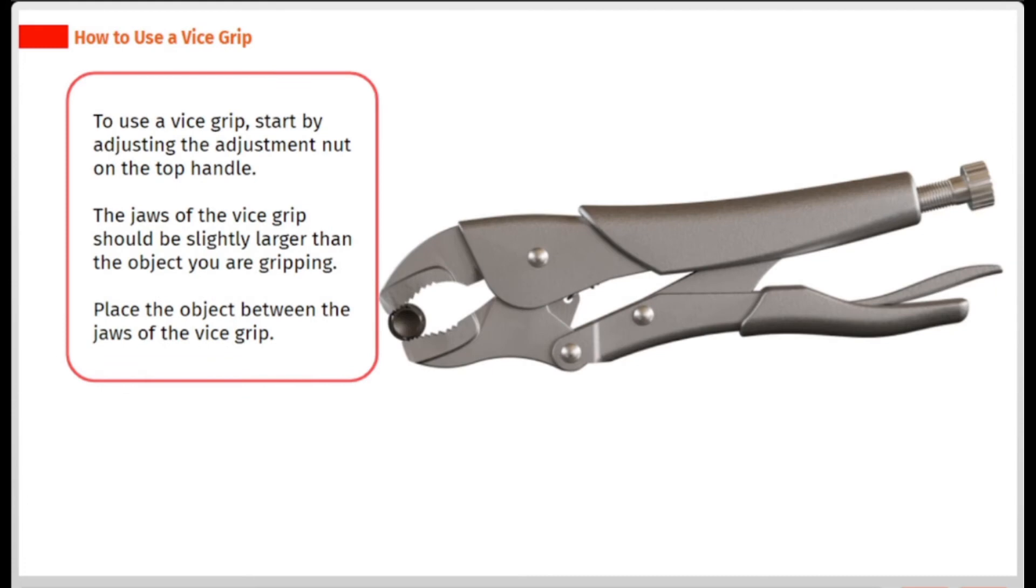To use a vice grip, start by adjusting the adjustment nut on the top handle. The jaws of the vice grip should be slightly larger than the object you are gripping. Place the object between the jaws of the vice grip.